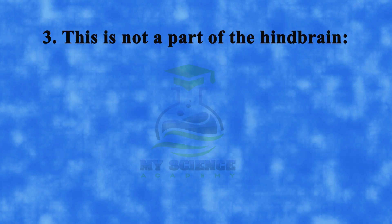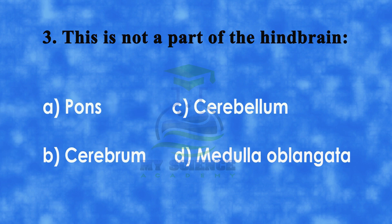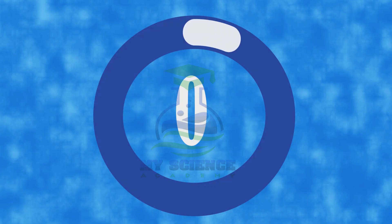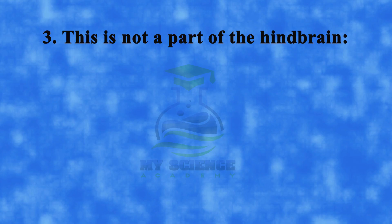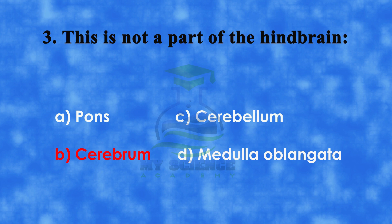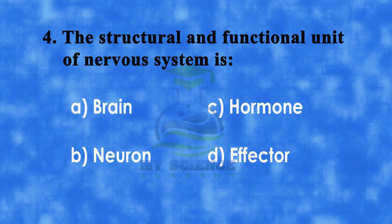Number 3: This is not a part of hind brain. A: pons, B: cerebrum, C: cerebellum, or D: medulla oblongata. And correct answer is B: cerebrum.